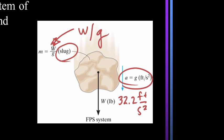It's very important. In the FPS system, you're usually given the weight, and you have to divide by g to get the mass. In the SI system, you're usually given the mass, and you multiply by g to get the weight.